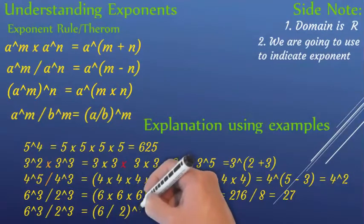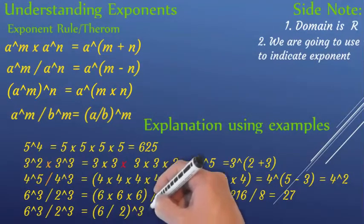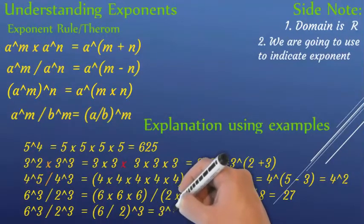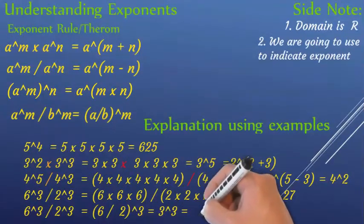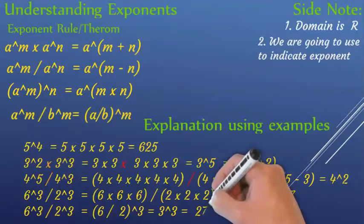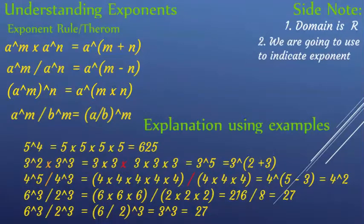The power of 3: 3 times 3 is 9, times 3 is 27. The power of 5 on the axis — you can see it on the right.